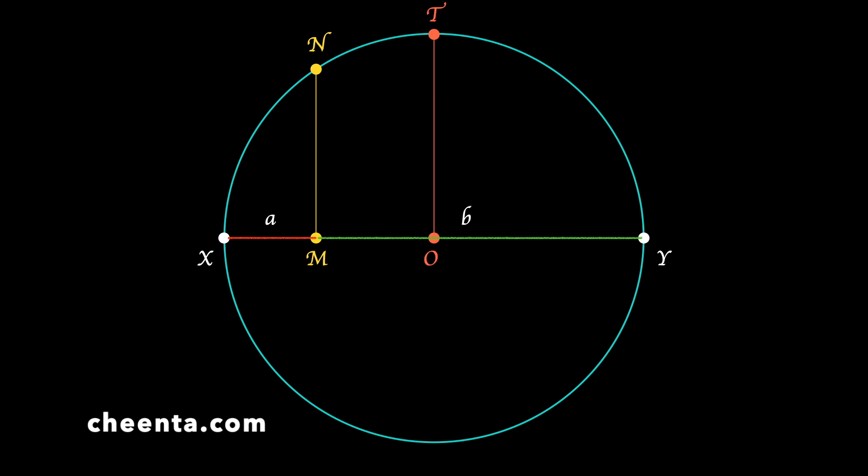I'll give the final answer: it is square root of a times b. In fact, this is the geometric construction of square root of a number.